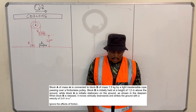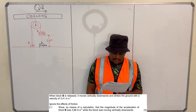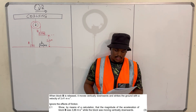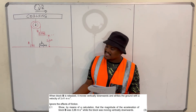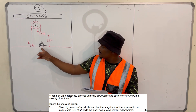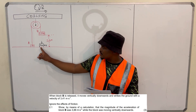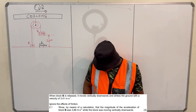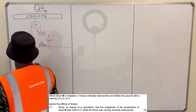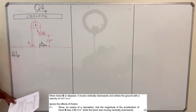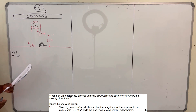Question 2.1: They are saying show by means of calculation that the magnitude of the acceleration of block B was 3.88 meters per second squared while the block was moving vertically downwards. So they want us to show that the acceleration of block B when it was falling from this height down to the ground was 3.88 meters per second squared.